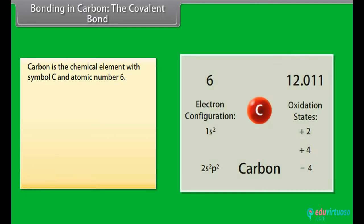Bonding in carbon: The covalent bond. Carbon is the chemical element with symbol C and atomic number 6. As a member of group 14 on the periodic table, it is non-metallic with four electrons available to form covalent chemical bonds.